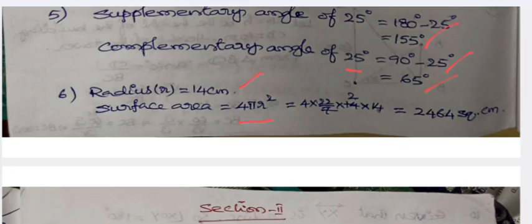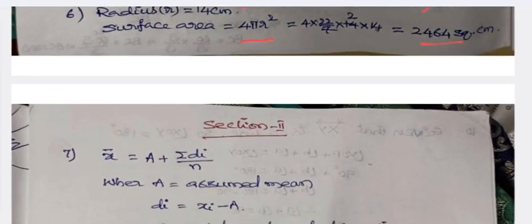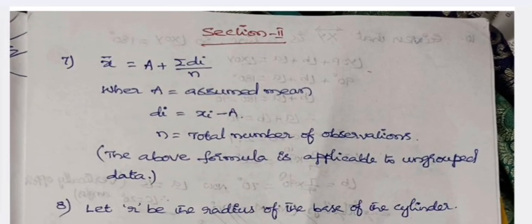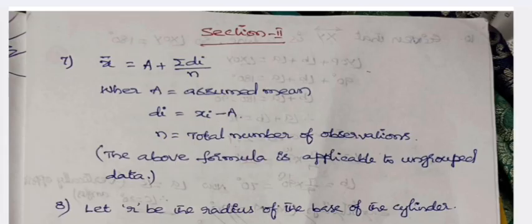Section 2: The formula to find mean using assumed mean for an ungrouped data is clearly given here. Each and every term is also explained.